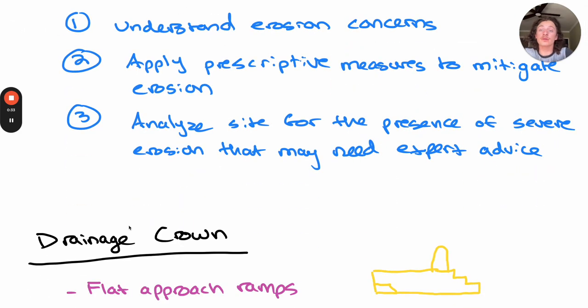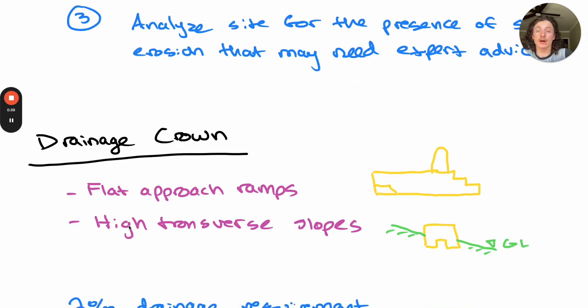We'll start with the drainage crown. The drainage crown is a technique for flat approach ramps and ramps with high transverse slopes. Standing water on the approach, towers, or walkway will degrade materials through the freeze-thaw and other processes.